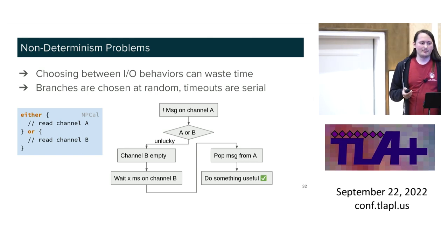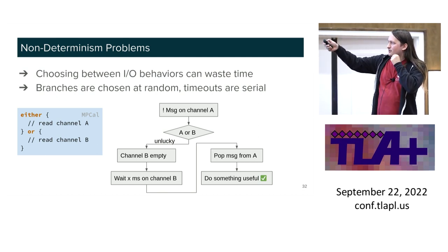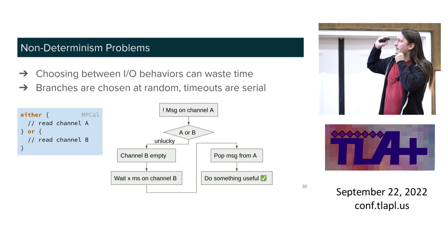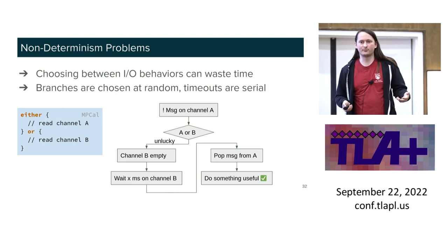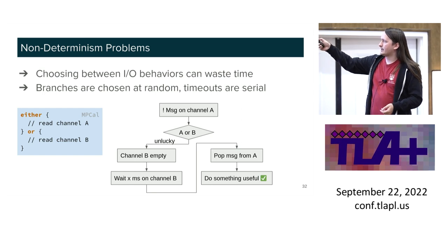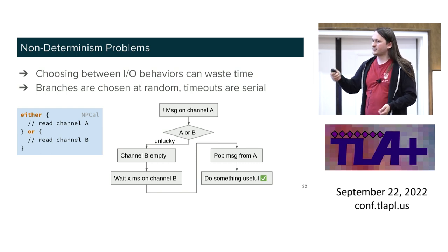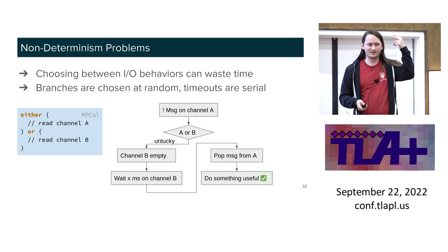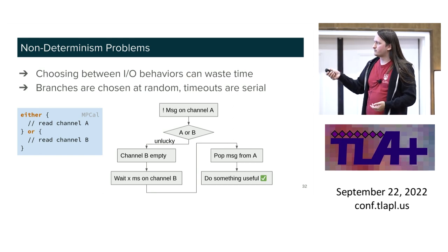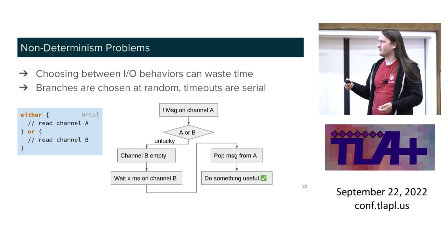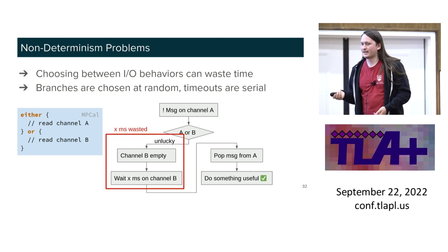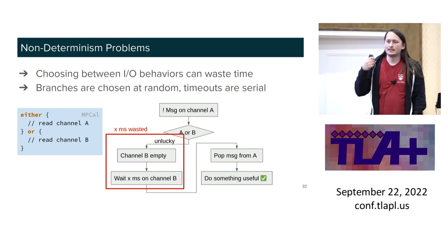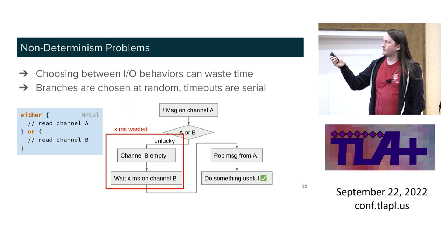To illustrate the problem: imagine 'either read from channel A or read from channel B,' and there's a message on channel A. Our handling of 'either' is a coin toss combined with the ability to unhappen a wrong guess. If you get unlucky and pick channel B when there's a message on channel A: channel B is empty, its implementation has a little grace period to avoid spin-waiting, so it waits X milliseconds to see if anything happens on channel B, then gives up and pops the message from A. We just wasted X milliseconds — and it gets worse the wider your 'either' branch is.